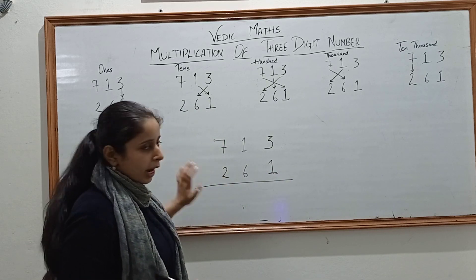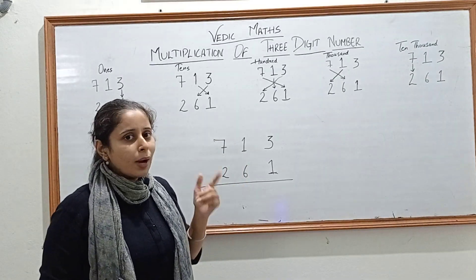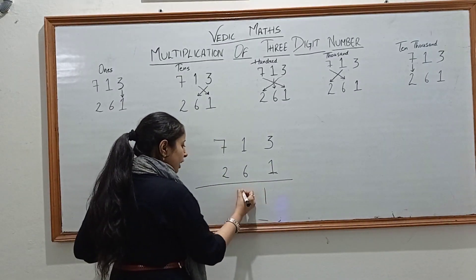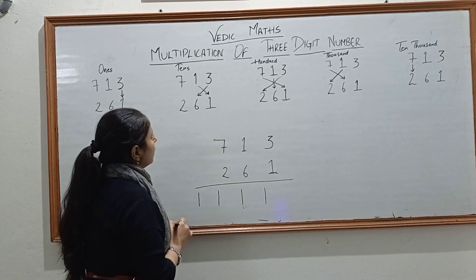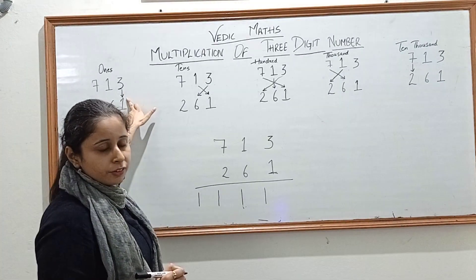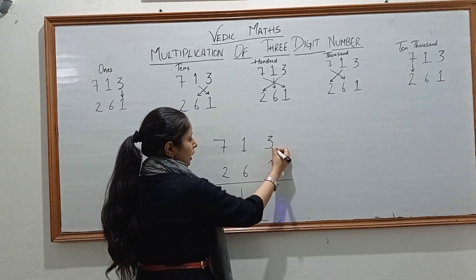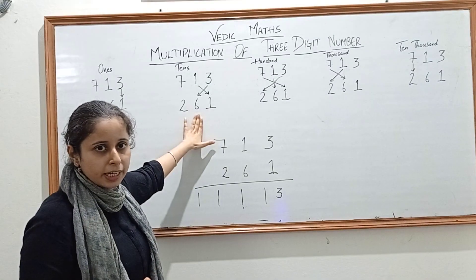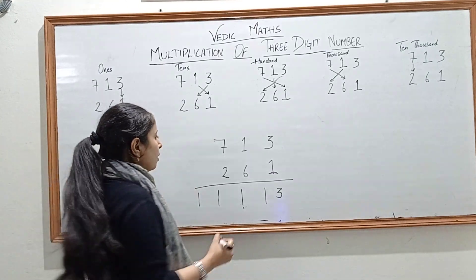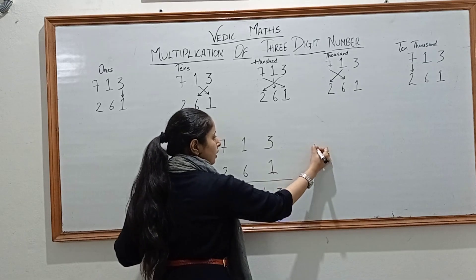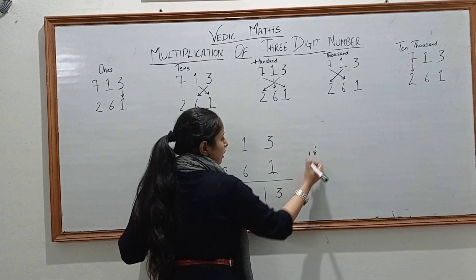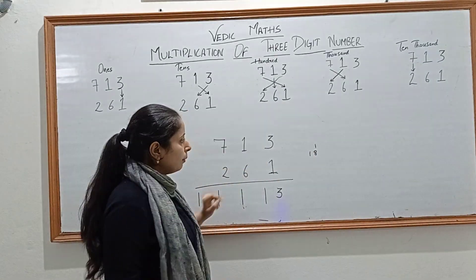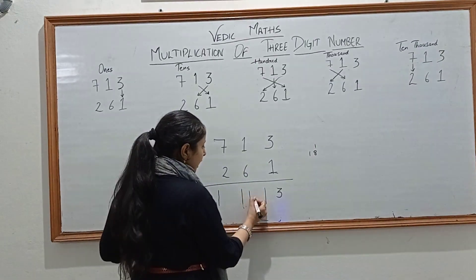I am going to divide the solution into 5 parts, because we have to follow these 5 patterns. The first pattern: multiply 3 into 1, which gives you 3. Now the second pattern — cross multiplication — for getting the digit on the 10th place: 1 into 1 is 1, and 6 into 3 is 18. You get 2 products. Add them: 18 plus 1 is 19. Write 19 here.